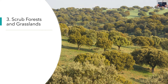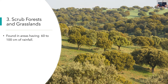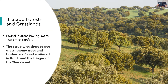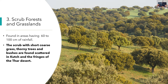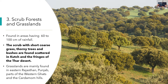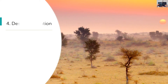Scrub Forest and Grasslands: They are found in areas having 60 to 100 centimeters of rainfall. The scrub with short coarse grass, thorny trees, and bushes are found scattered in Kutch and the fringes of the Thar Desert. Grasslands are mainly found in eastern Rajasthan, Punjab, parts of the Western Ghats, and the Cardamom Hills.